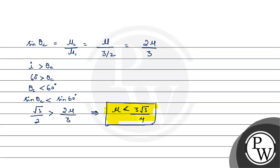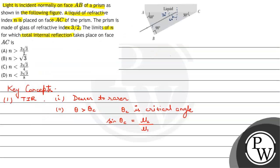Let's check our options now. Option C gives us the value of n less than 3 root 3 over 4. Hence option C is the correct answer to this question.